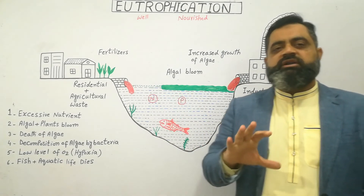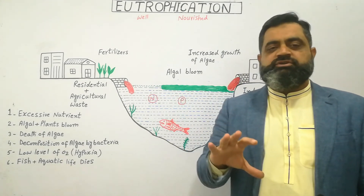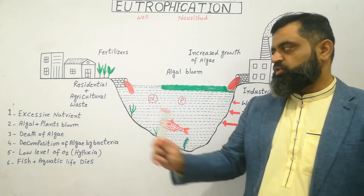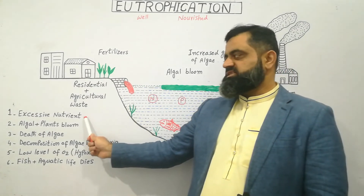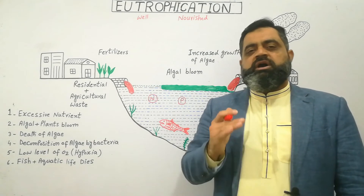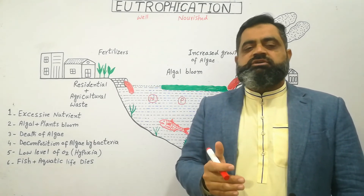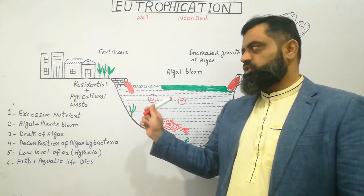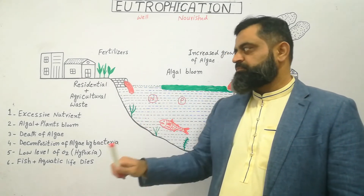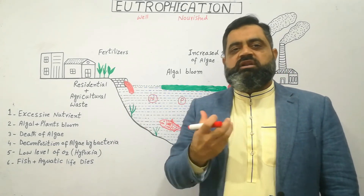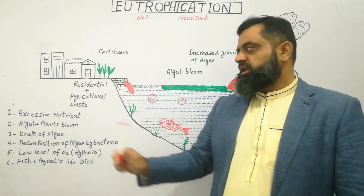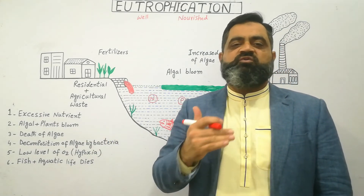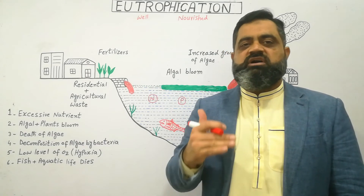I have divided the whole eutrophication process into six steps so you can easily understand. Step one: excessive nutrients from urbanization, sewage, agriculture waste, and industrial waste are added into the water. Step two: when there are a lot of nutrients in the water, algae and plants start to grow at a very rapid rate, which is called a bloom.